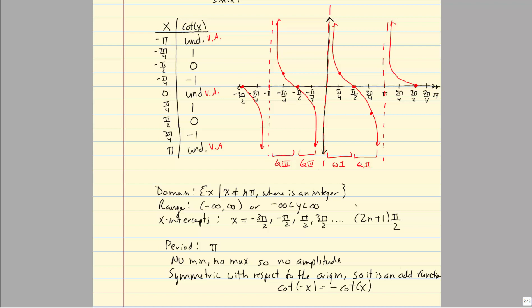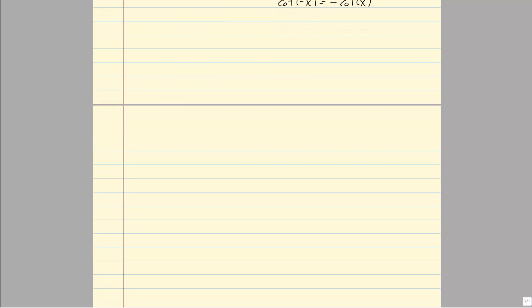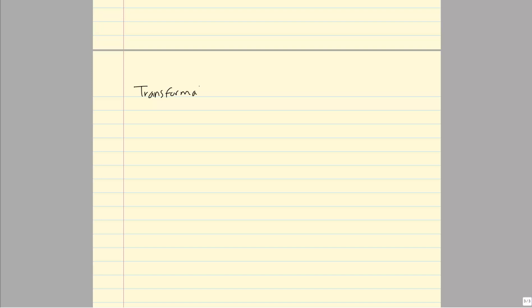Those are characteristics of the tangent and cotangent function. All of the transformations we're about to look at are the exact same transformations as we looked at for sine and cosine. So let's go ahead and look at transformations, and we'll also look at the five-step method for tangent and cotangent, which is the same type of idea.